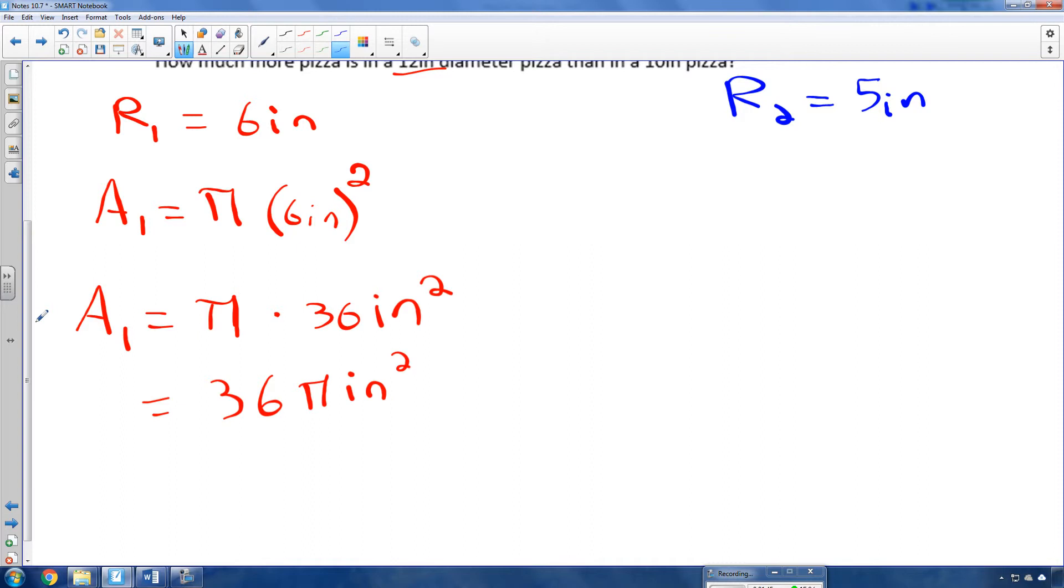So we always put the pi towards the end, and then the units at the very end, and it's squared. So that's the area of our first pizza. The area of our second pizza is simply pi r squared, which is 5 inches squared. So we need to take 5 inches and multiply it by 5 inches. 5 times 5 is 25. Inches times inches is inches to the second power. And we have a pi. 25 pi inches squared is area 2.